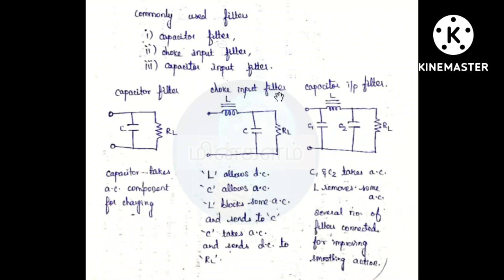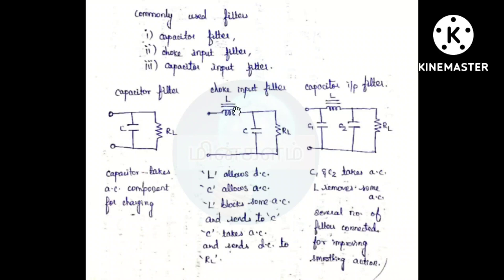This is the Choke Input Filter. At the input, we call the inductor a choke. What does the inductor do? It allows DC to pass. But the inductor will block AC — it does not allow AC through. The inductor is placed in series, and it blocks the AC component while allowing DC to pass.